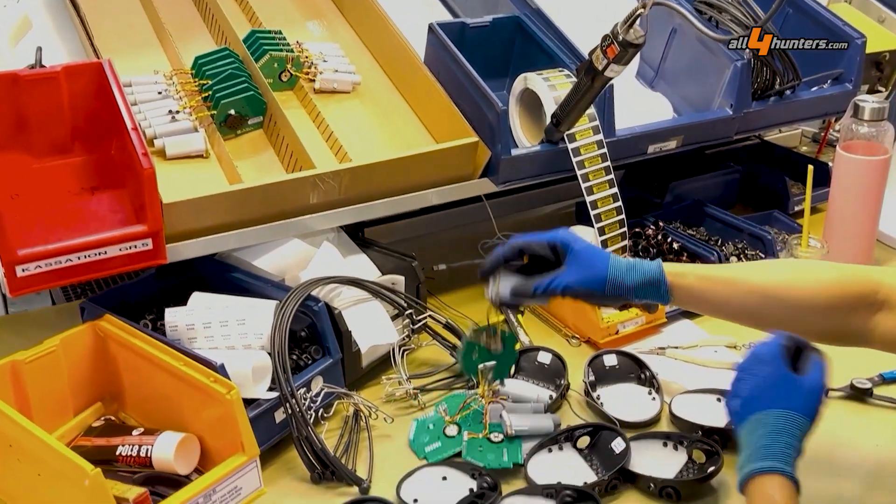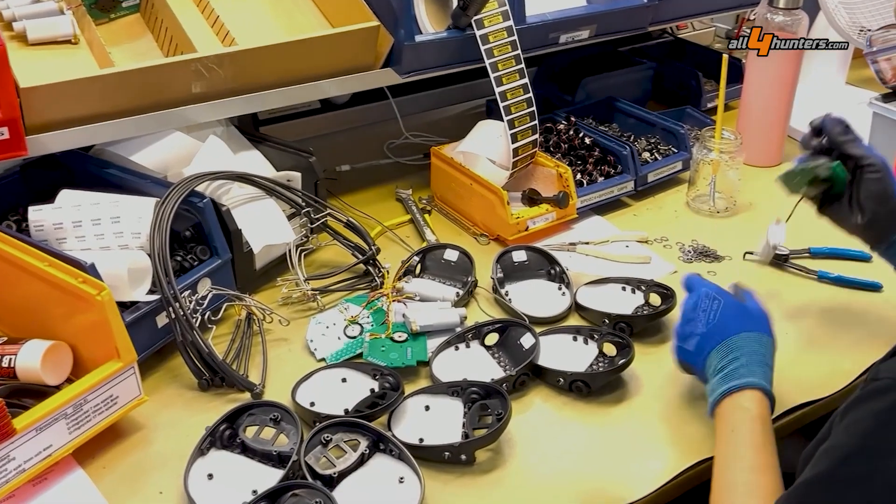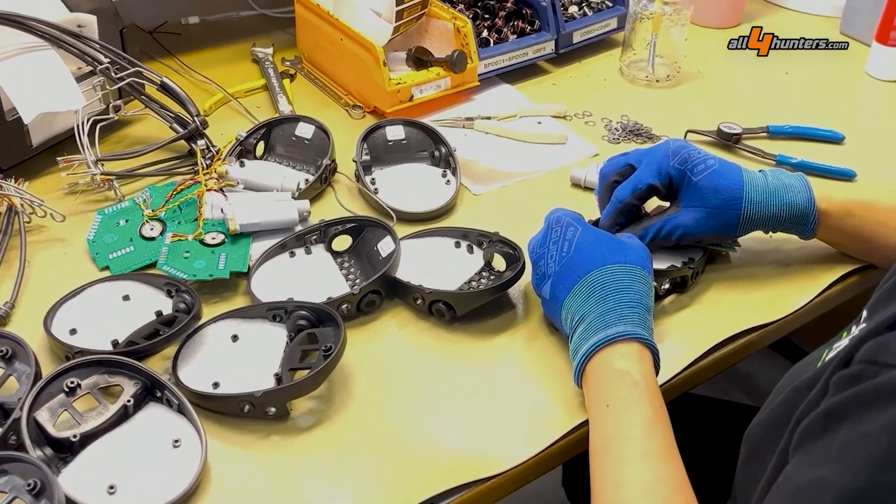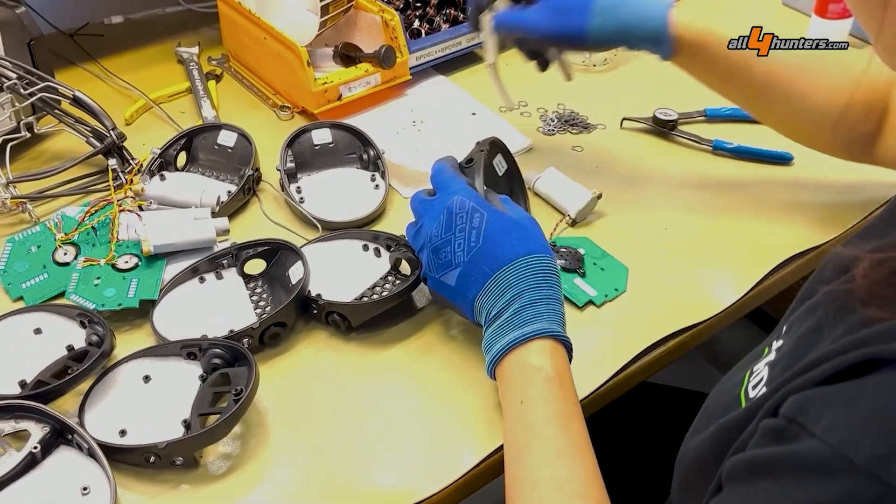Now, the first circuit board goes into the hearing protector. And the whole procedure starts with putting the microphone into the previously addressed rubber seal.